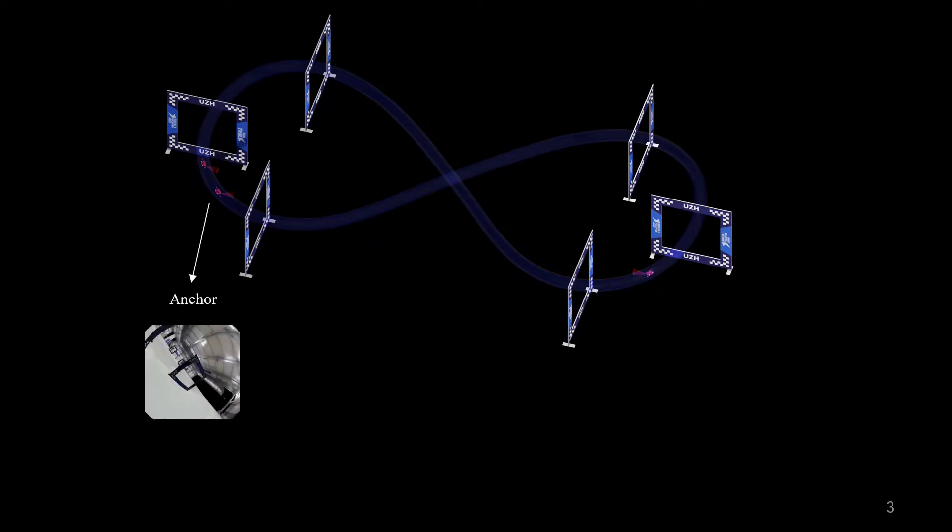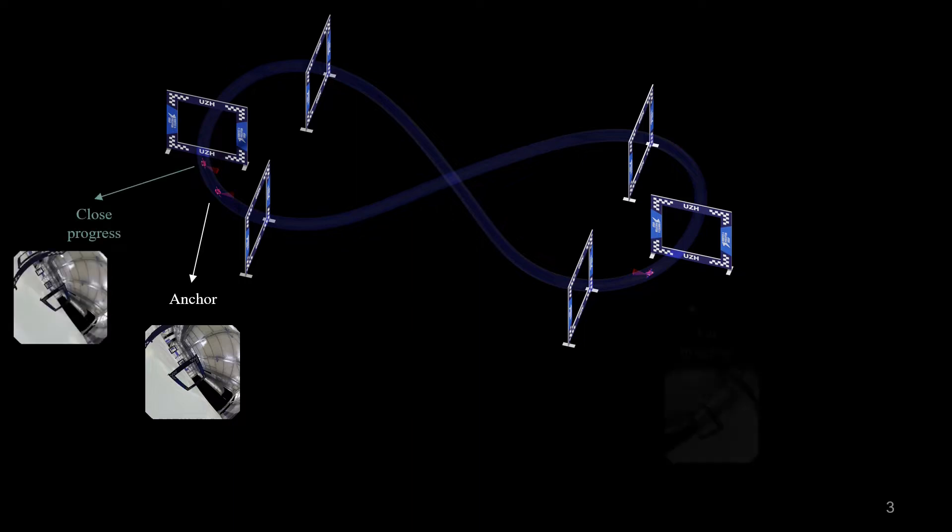Using a rollout trajectory, we first select an anchor image perceived at a certain position, then we randomly sample the close and far progress with respect to the anchor pose, and then render the images.